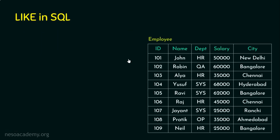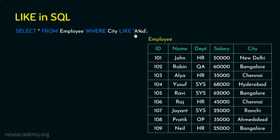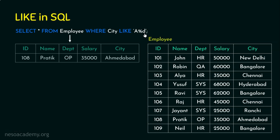Example 4: SELECT * FROM employee WHERE city LIKE 'a%d'. Please pause and think about the answer. The pattern means the string should start with 'a' and end with 'd'. The only city matching this criteria is Ahmedabad, so we get a result set with only one row.